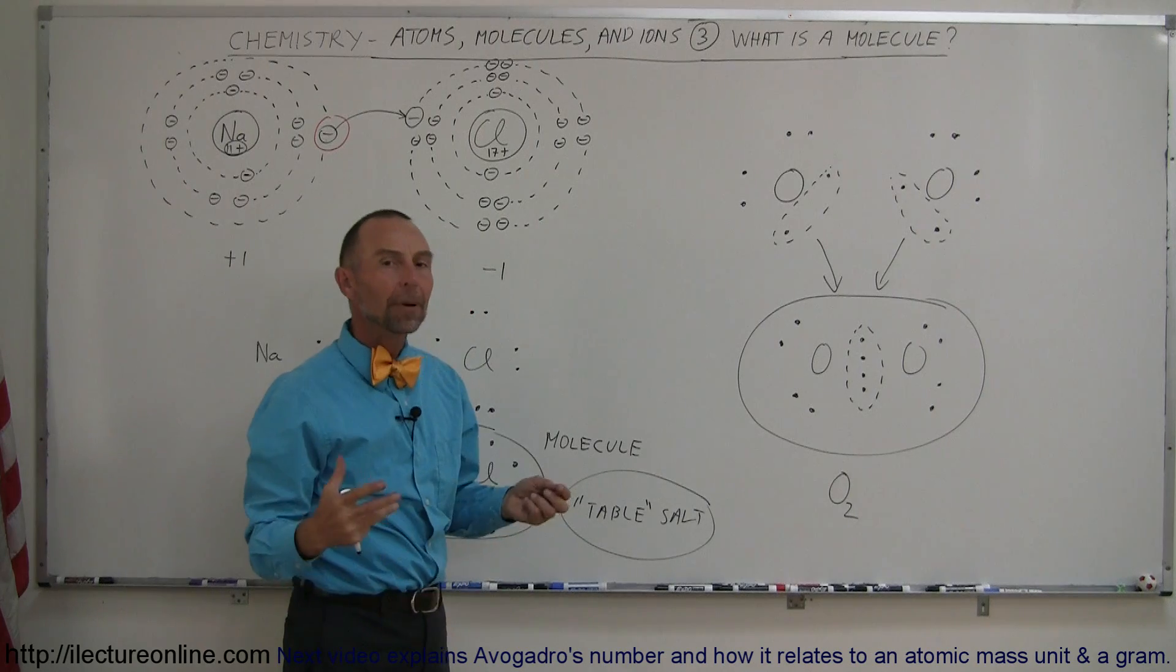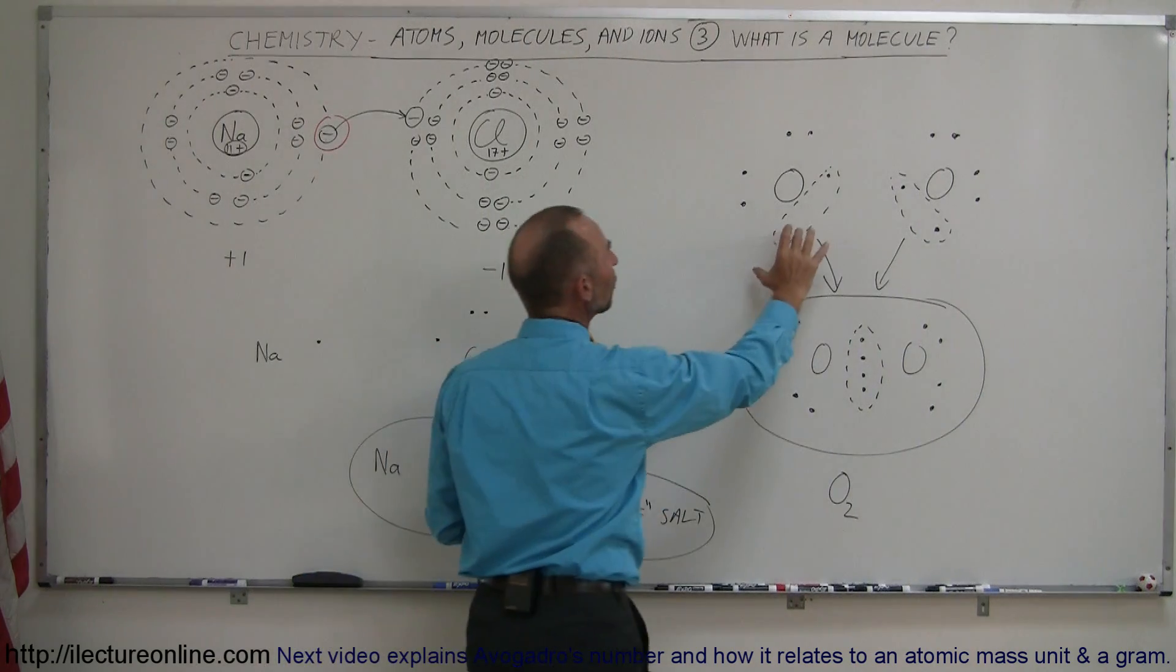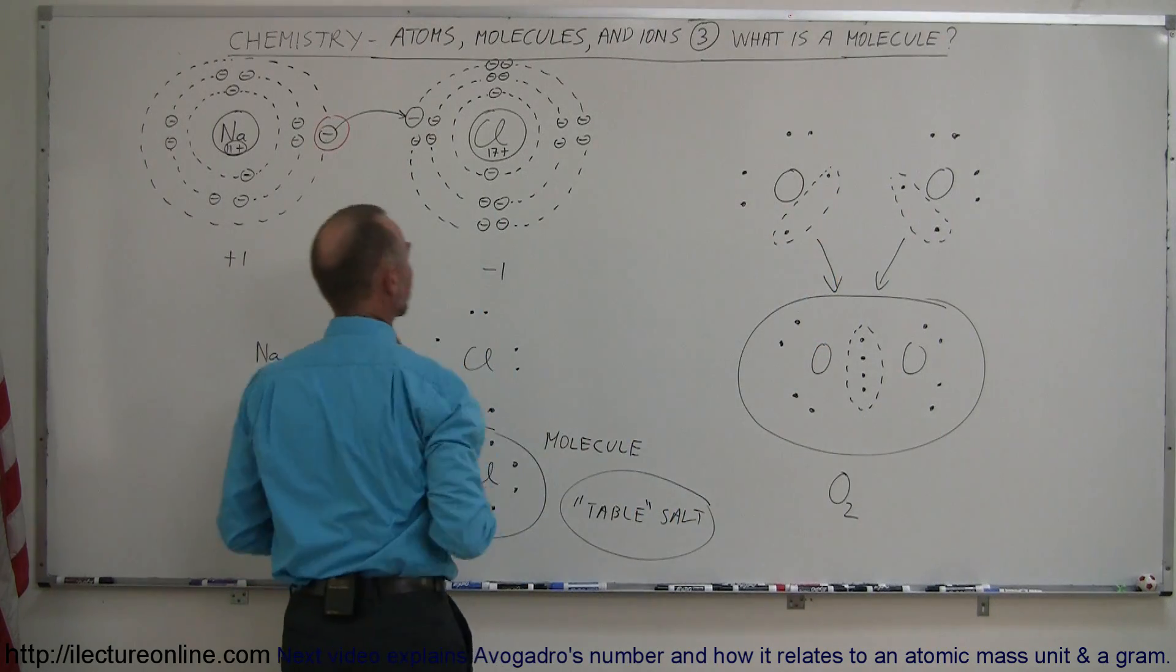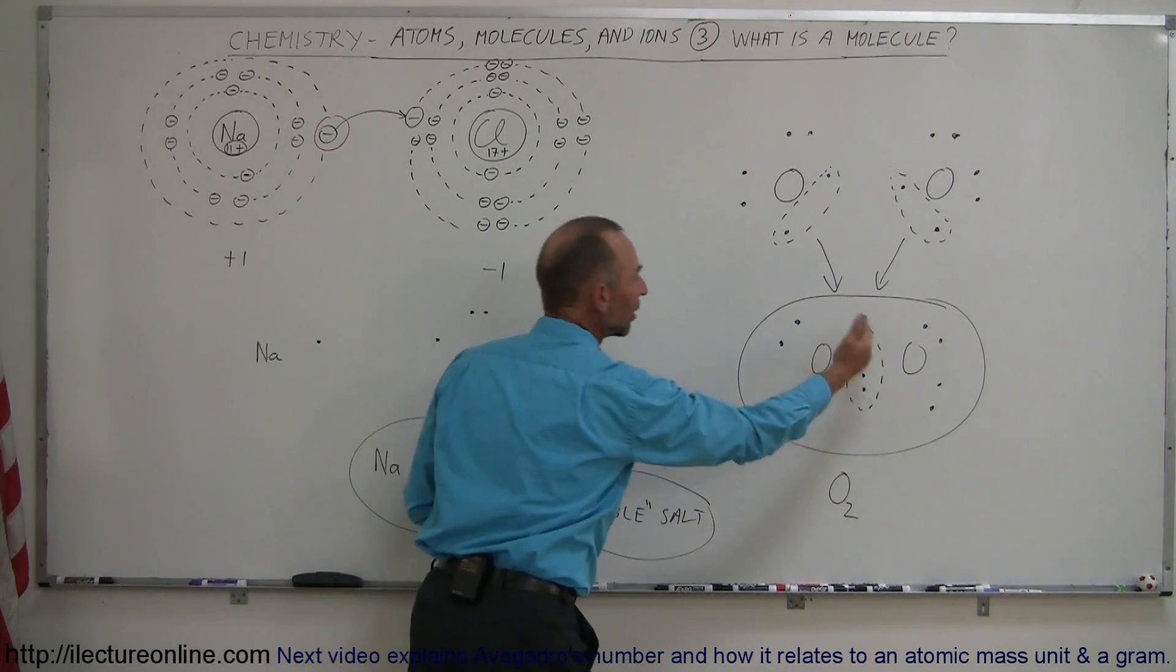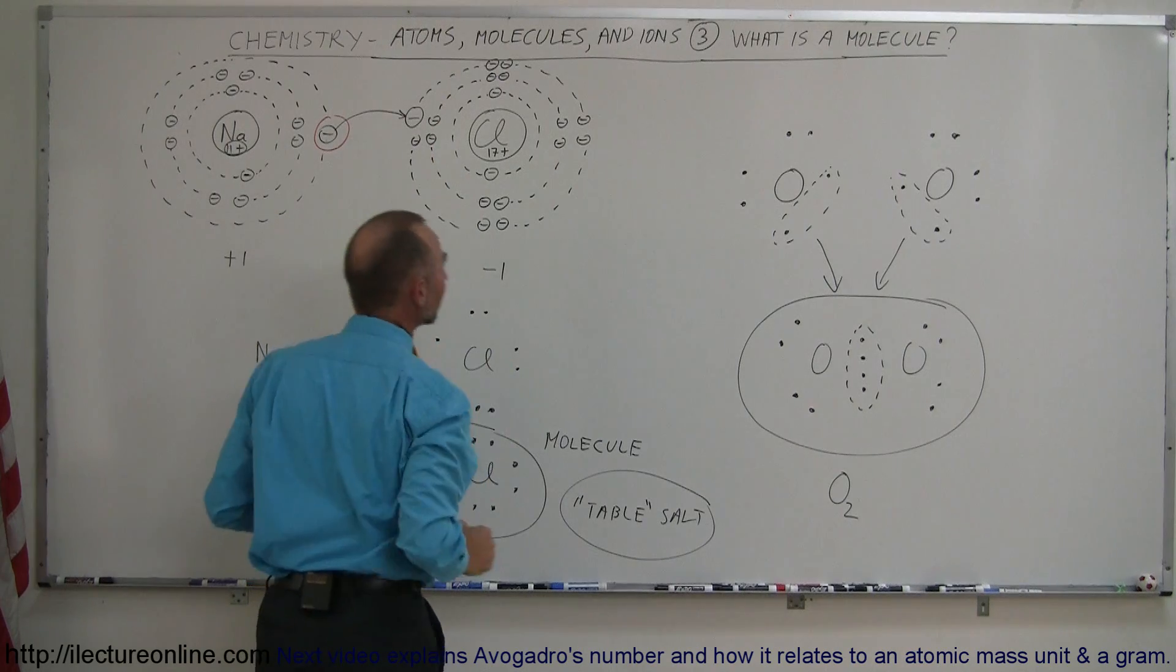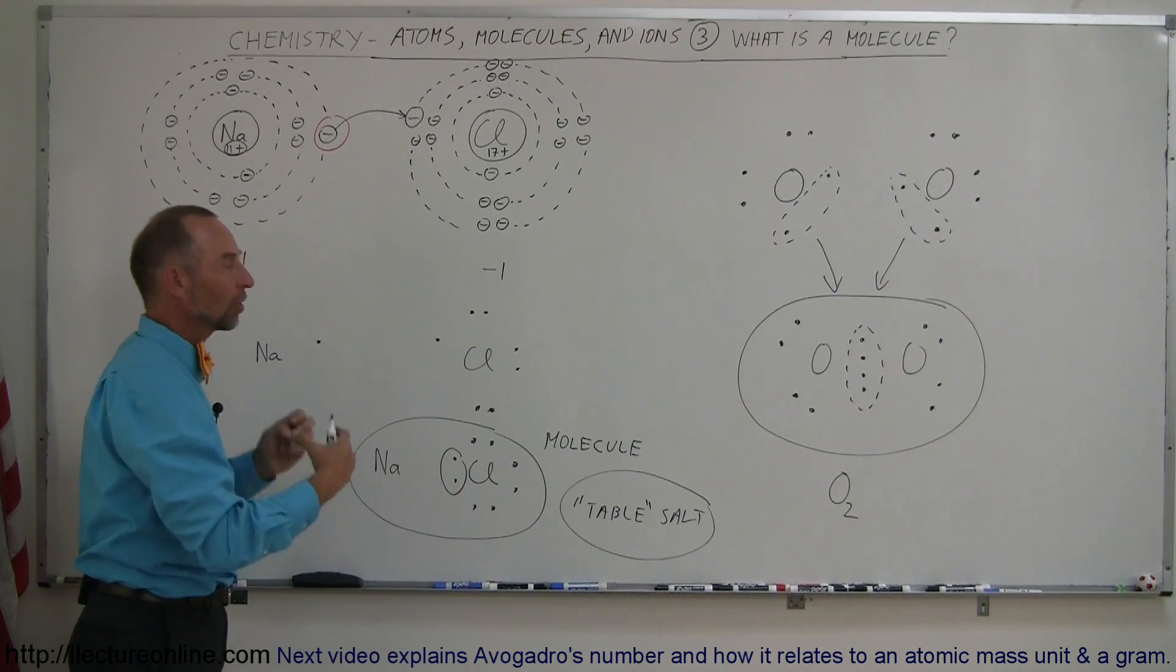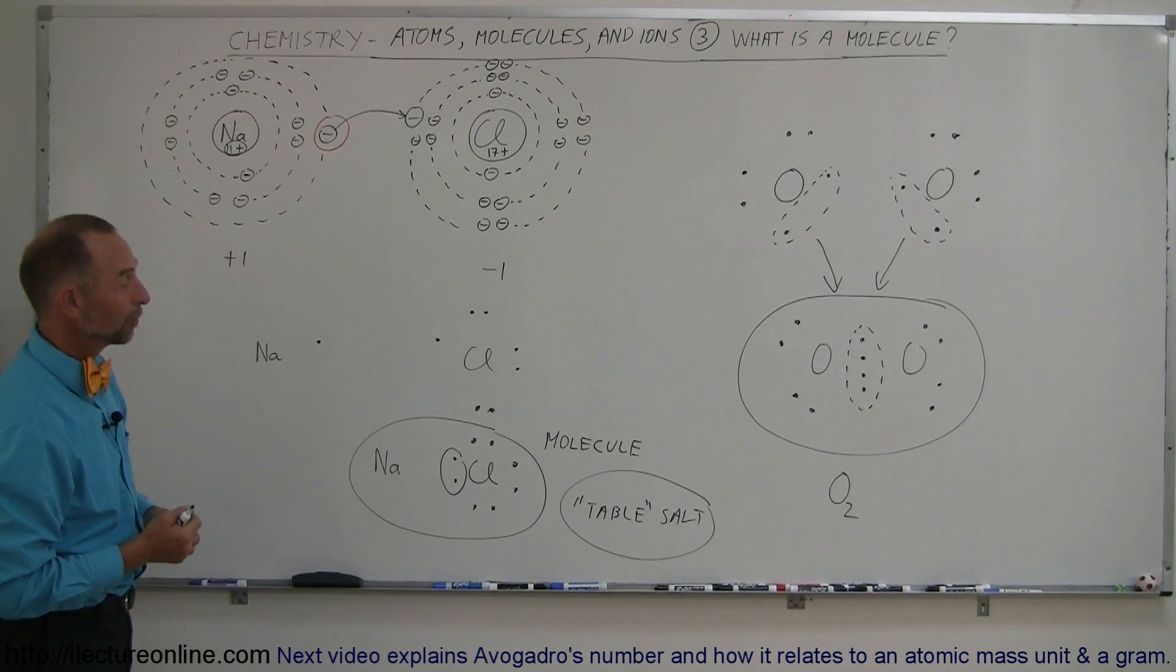So that's how molecules are formed. We take atoms that either have a lack or an excess of electrons, those electrons are then shared, sometimes they're shared like this, sometimes they're shared by moving one electron from one atom to the other atom, and then they're electrically charged, and then they attract each other because of the difference in the electrical charge. And that's how molecules are formed.